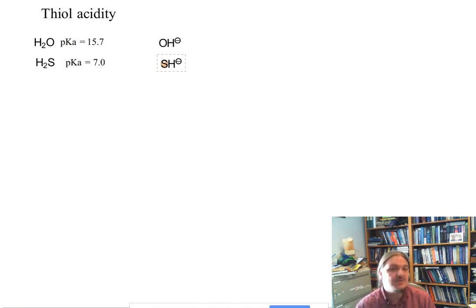Hydrogen sulfide is a much stronger acid than water, and that's partially because the sulfur atom is a larger atom than oxygen. The sulfur atom distributes that negative charge over a larger volume of space, even though oxygen is more electronegative.